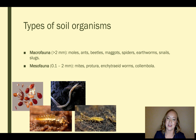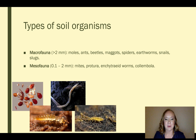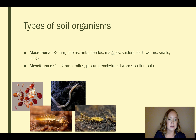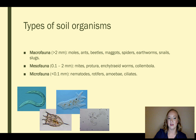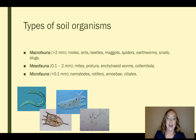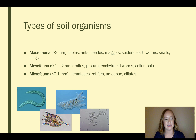Then we have mesofauna and these are 0.1 to 2 millimeters in size — a little bit smaller. These include mites, and on the left hand side of the screen that first picture shows different sizes and types of mites, protura, small clear worms, and also columbula. The next size is smaller than 0.1 millimeters and these are called microfauna. These include nematodes, rotifers, amoeba, and ciliates.